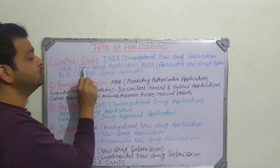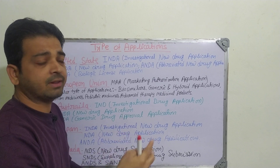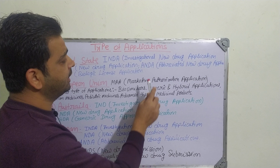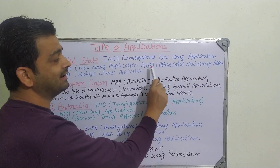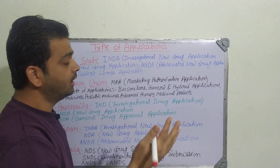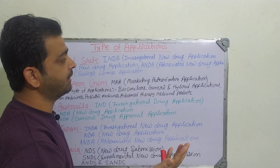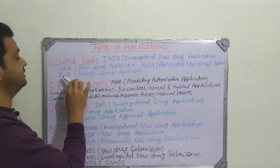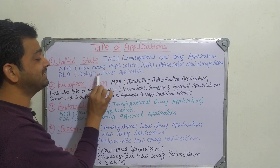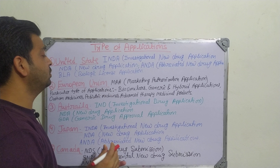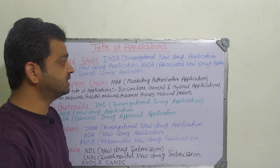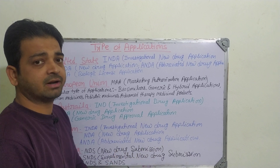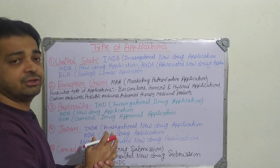The second application in the US is the NDA — New Drug Application — filed once clinical trials are done. The third is the ANDA — Abbreviated New Drug Application — for patent-expired drugs, used to apply for generic drug approval. Apart from these three, there is also the BLA — Biologic License Application — related to biological products like vaccines and sera. We need a license for manufacturing and marketing such products, and for that, we file the BLA in the US.